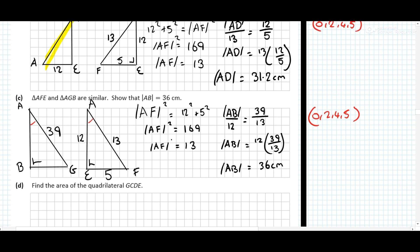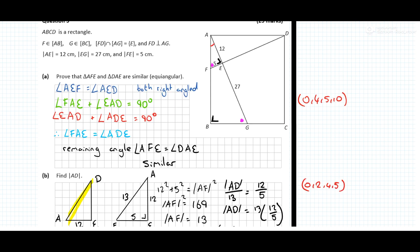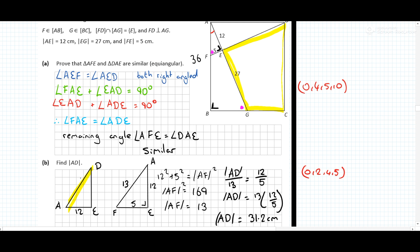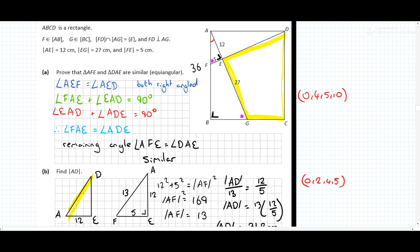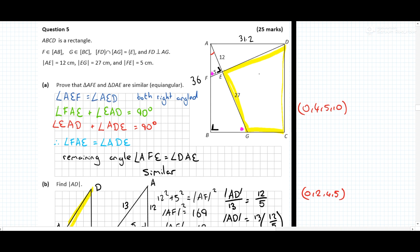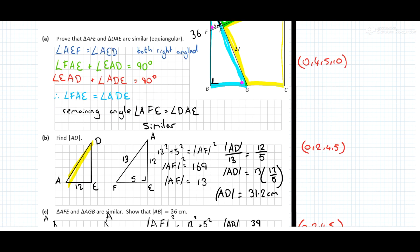Find the area of the quadrilateral GCDE — that's the area in here. We know AB is 36 and AD is 31.2 from part B. We can find the area of the entire rectangle, then subtract the area of triangle ABG and the area of triangle AED, to be left with the yellow quadrilateral. So: 36 times 31.2.